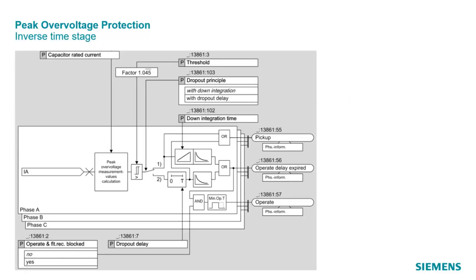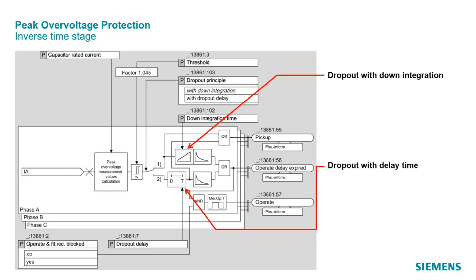The function offers two different delayed drop-off methods. The first is called drop-out with down integration: the pickup resets immediately, but the operate delay timer is counted down from the last reached value to zero linearly. With a new pickup, the time starts from the last time value reached during the countdown. As a difference, the drop-out with delay time keeps the pickup for a settable time where the operate delay timer remains frozen. If the pickup returns, the operate delay timer starts from the frozen value. These methods ensure that returning short voltage peaks will also lead to a tripping command, even if the duration of each single voltage peak is too short for tripping according to the characteristic.